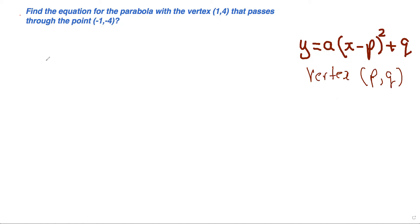Now to find the equation, I work with this form. My vertex is given as (1,4), so I fill that in to get y = a(x - 1)² + 4.